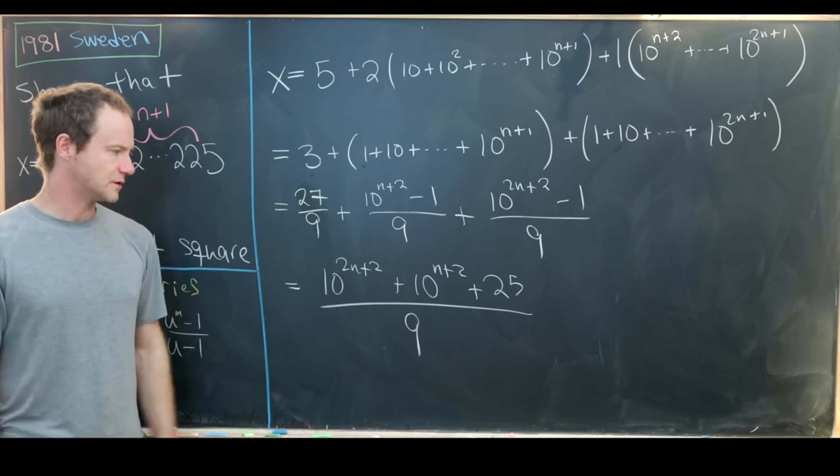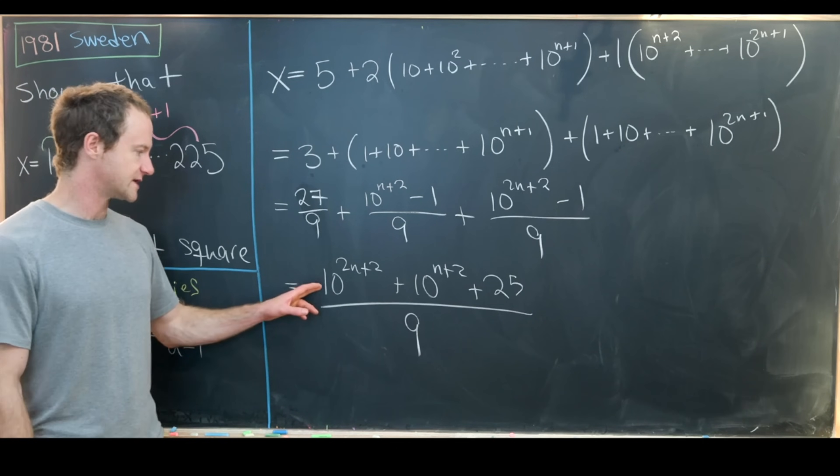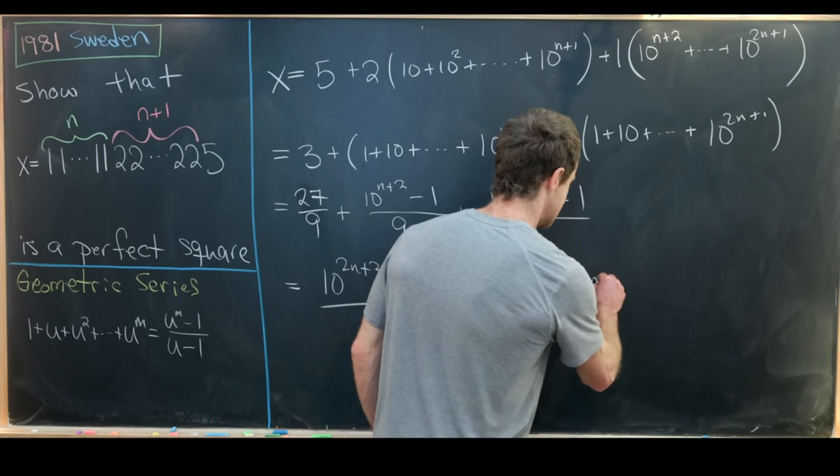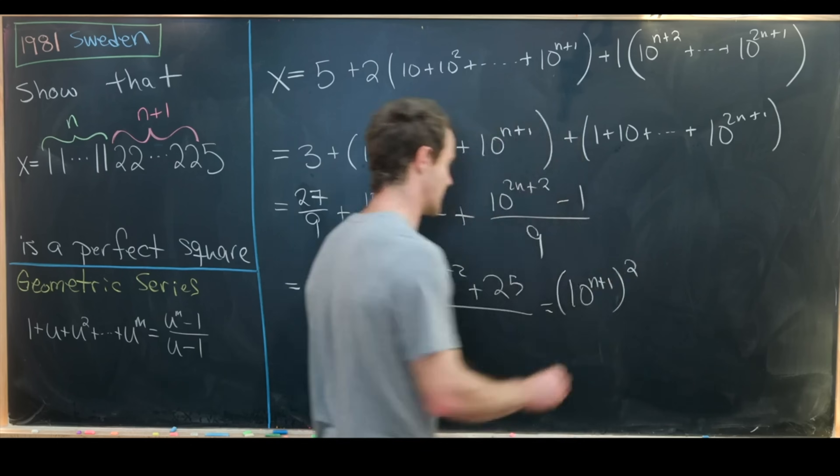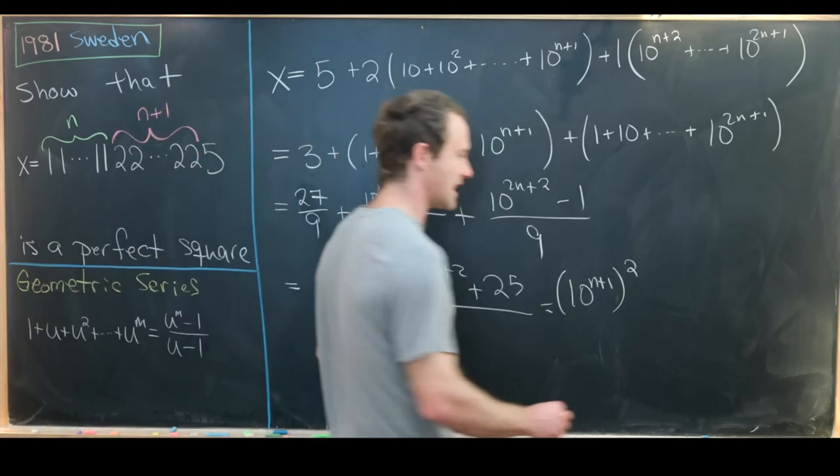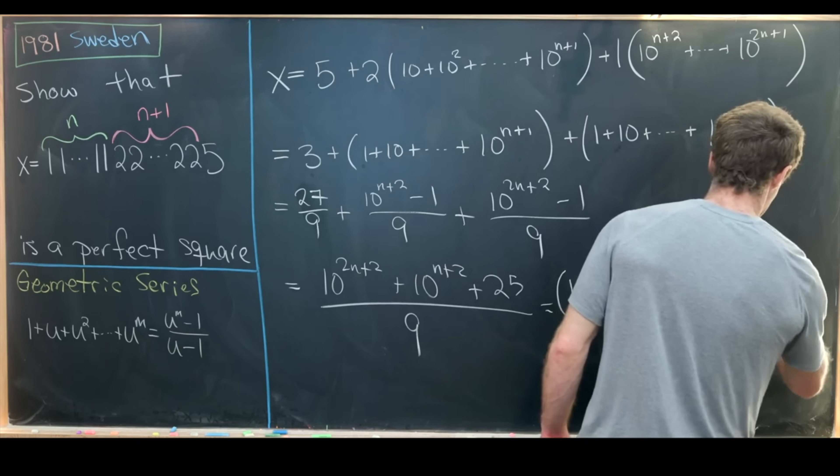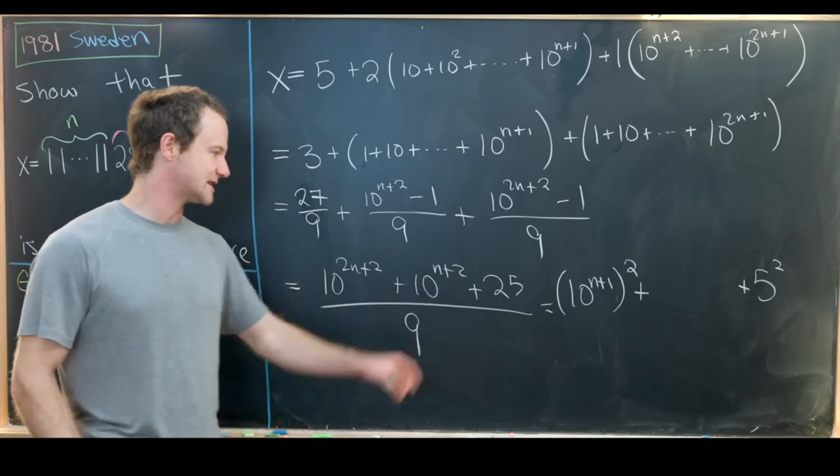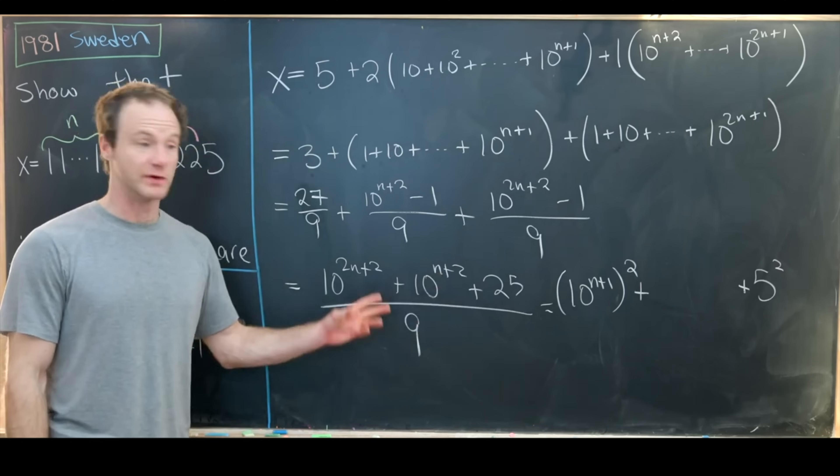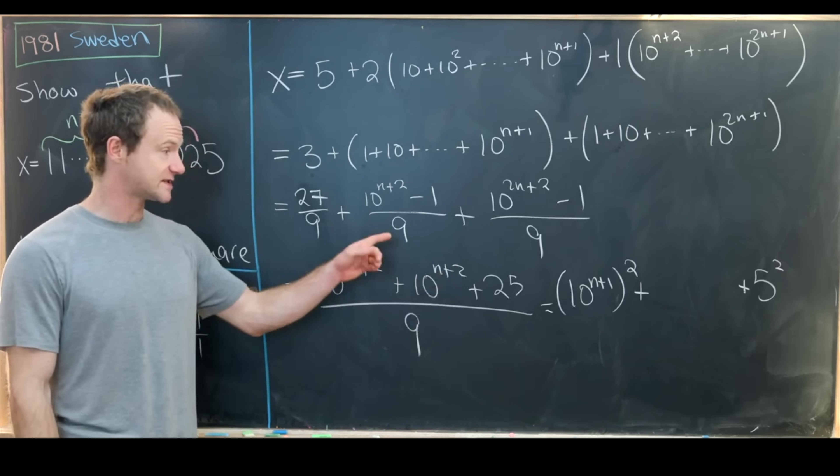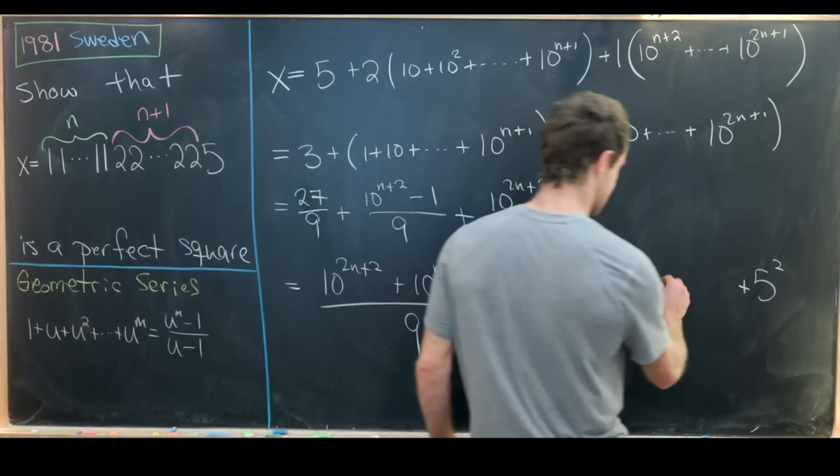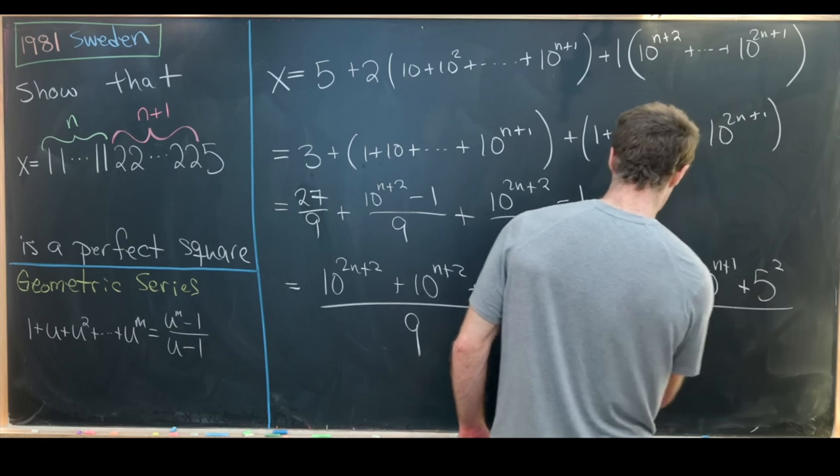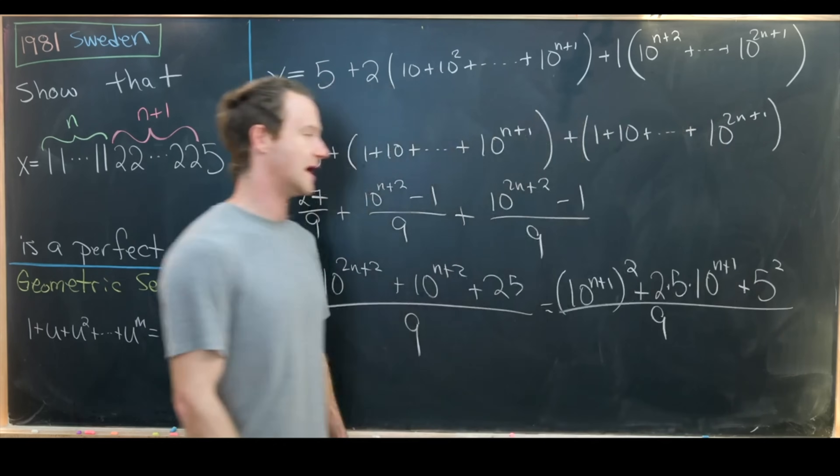Now this almost looks right but not quite. Notice this 10^(2n+2) can be rewritten as (10^(n+1))². This 25 can be rewritten as 5², but this thing in the middle is not exactly 10^(n+1), but notice that it's twice 5 times 10^(n+1). So we've got 2×5×10^(n+1), that's all occurring over 9.